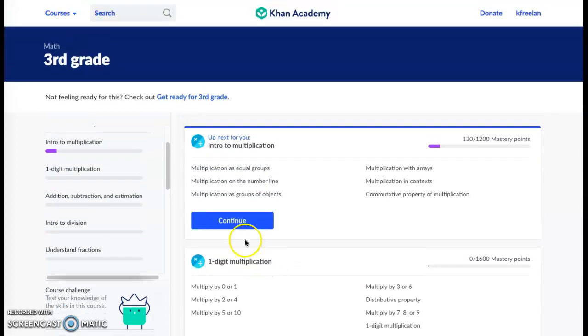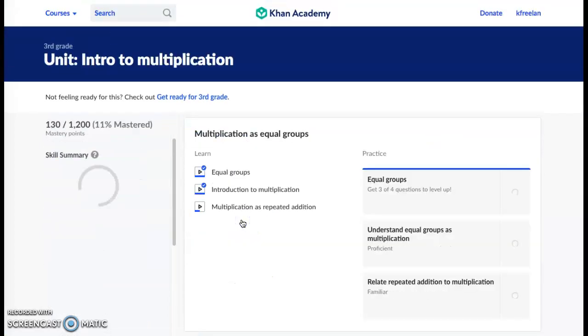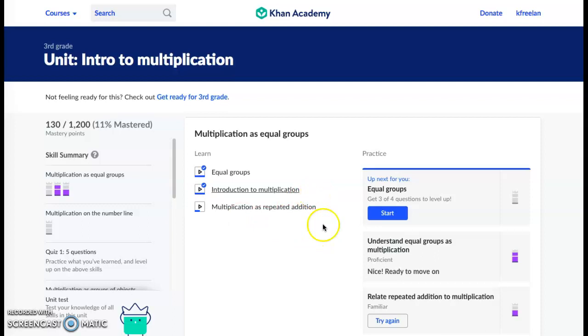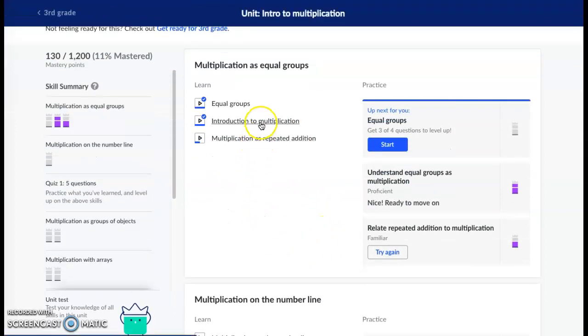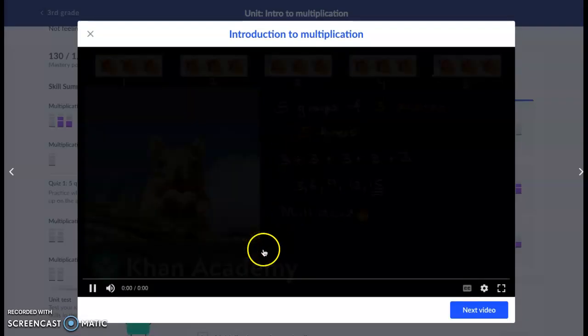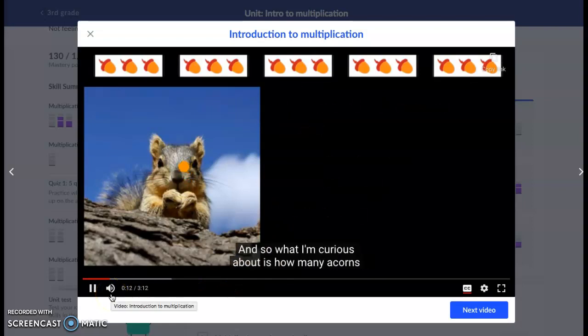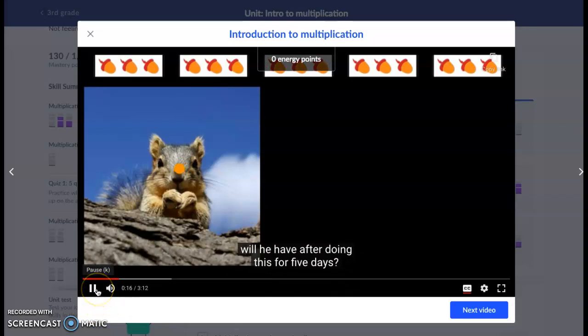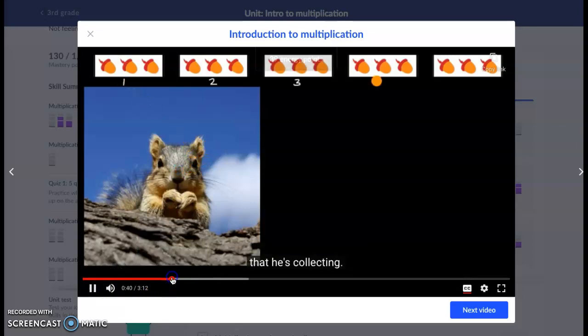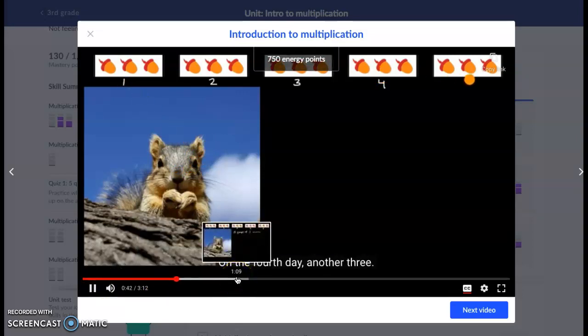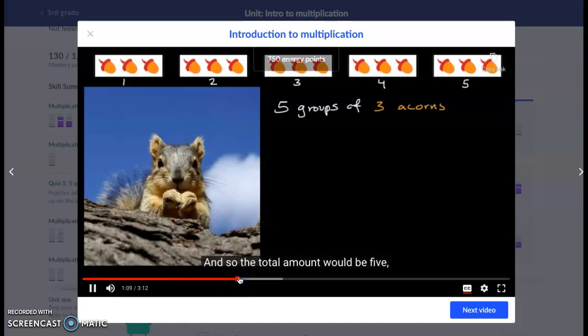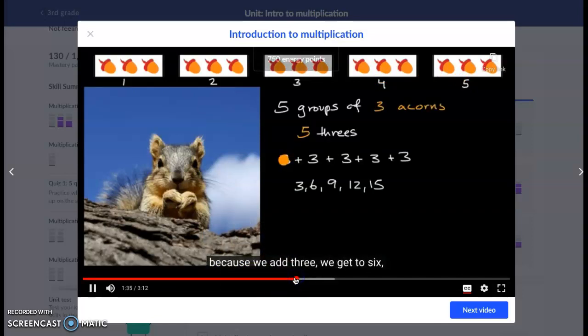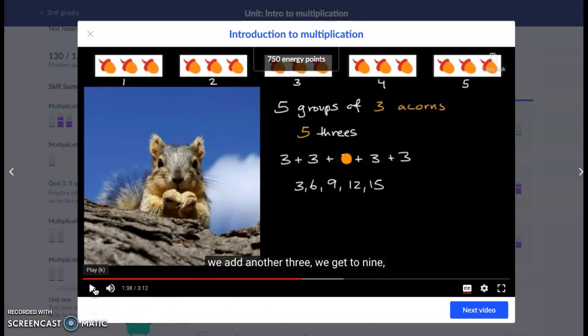And let's go here, for example like here. Three acorns - and so what I'm curious about is how many acorns will he have after doing this for five days. So one way to think about it is every day he's collecting. On the fourth day another three, on the fifth day. The total amount would be - we add three we get to six, we add another three.